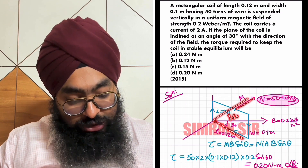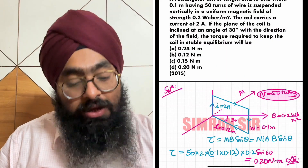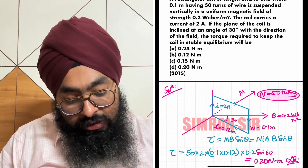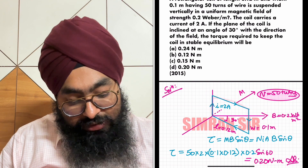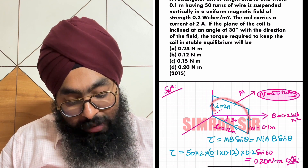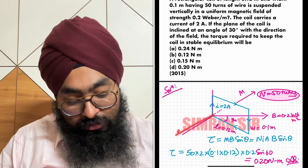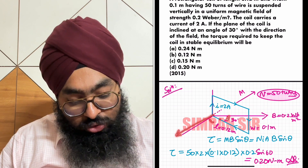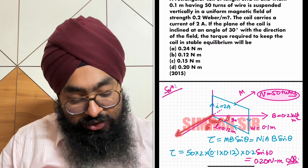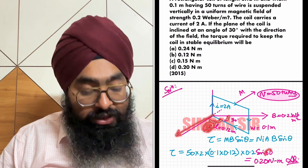This angle will be 60 degrees. So M and B make an angle of 60 degrees. If you don't mind the current direction, the magnetic dipole moment will be in this direction. Since the plane is inclined at 30 degrees, this angle becomes 60 degrees, so sin theta will be sin 60 degrees.